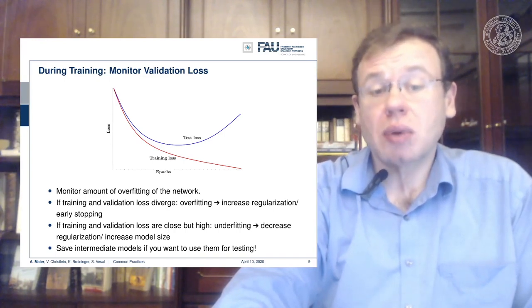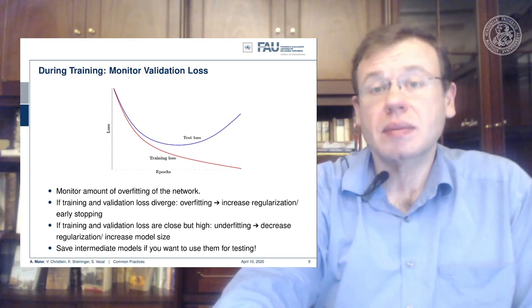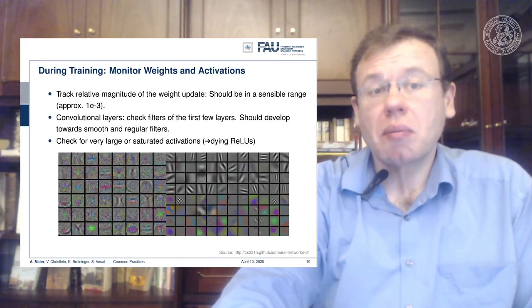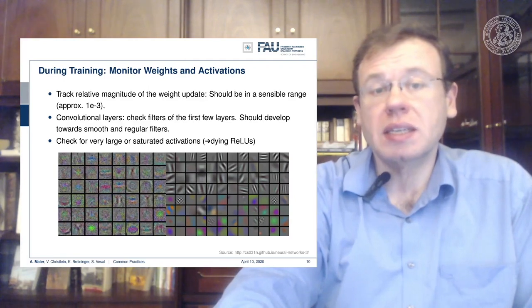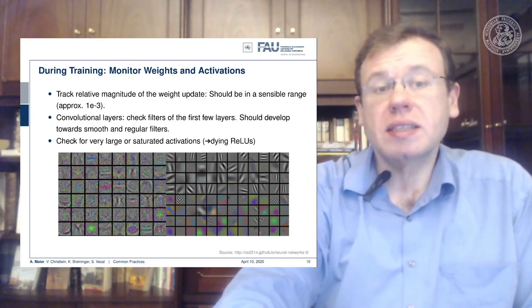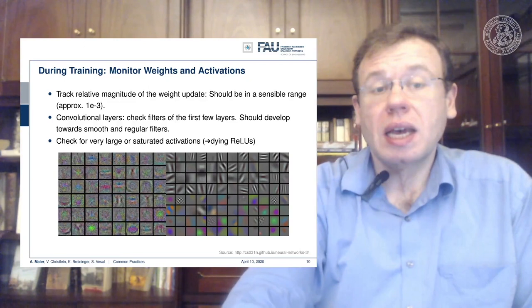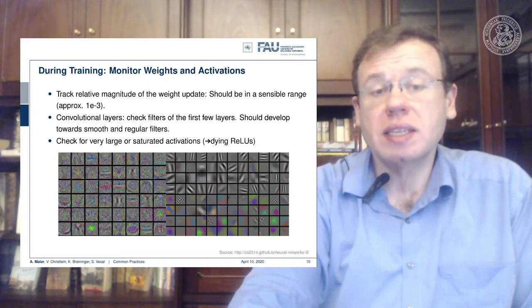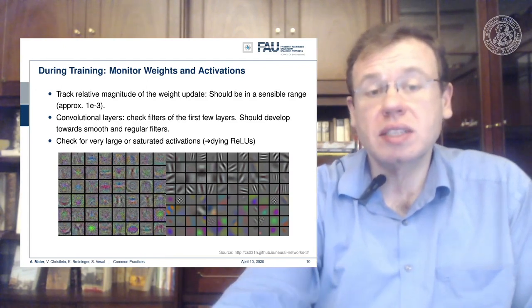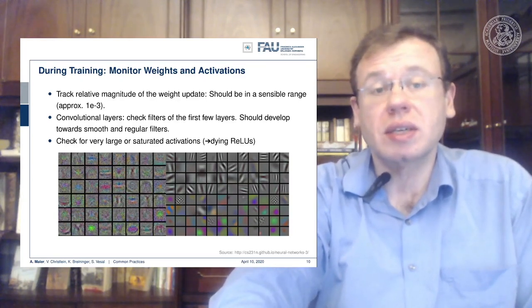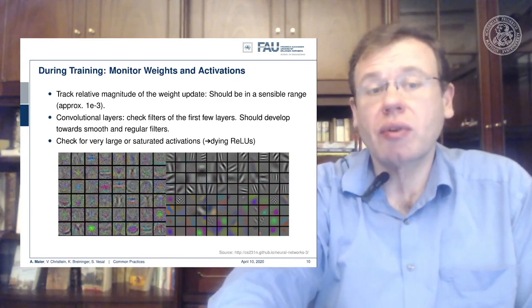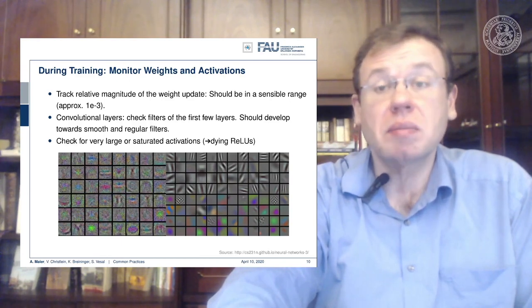You may want to save intermediate models for later testing. Further during training, monitor the weights and the activations. Keep track of the relative magnitude of weight updates — they should be in a sensible range, maybe around 10 to the power of minus 3. With convolutional layers, check the filters of the first few layers; they should develop towards smooth and regular filters. The ones with considerable amounts of noise may not produce reliable features. Also check for large or saturated activations — keep in mind that dying ReLU may happen.